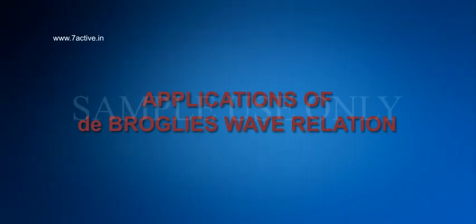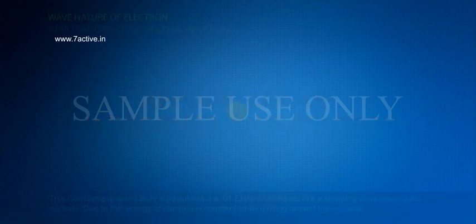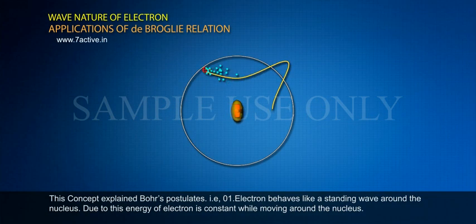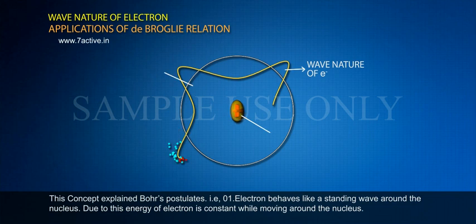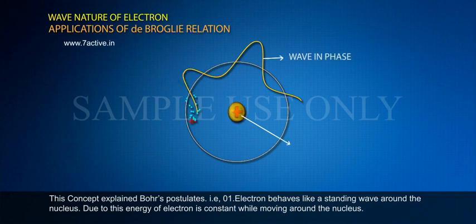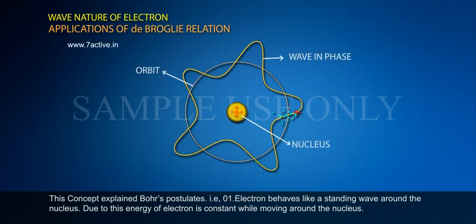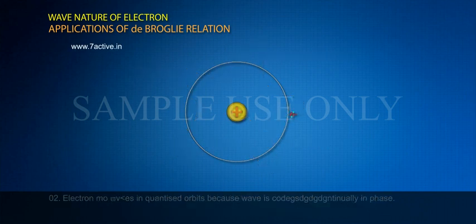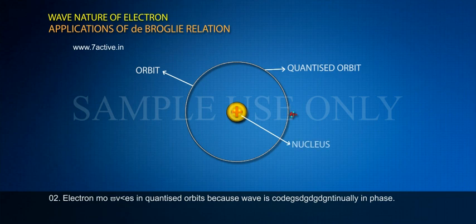Applications of de Broglie's Wave Relation. This concept explains Bohr's postulates. The electron behaves like a standing wave around the nucleus. Due to this, the energy of electron is constant while moving around the nucleus. Electron moves in quantized orbits because the wave is continually in phase.